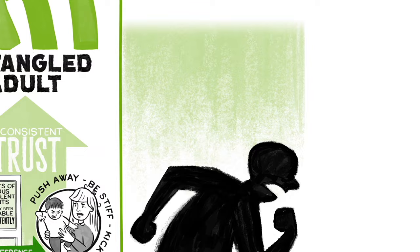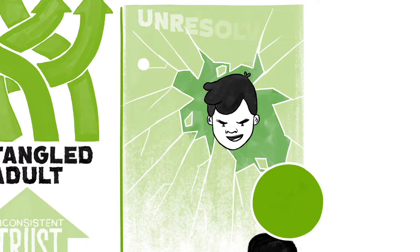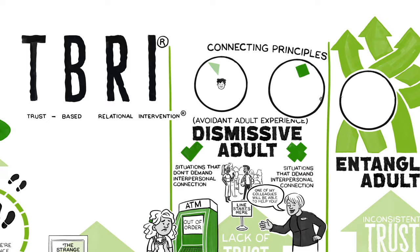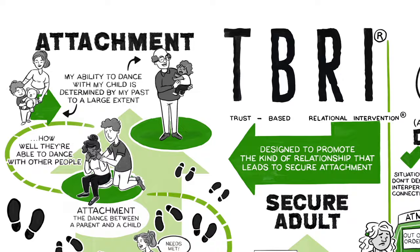When attachment is derailed, we have kids who look angry and can't regulate their emotions. In TBRI, we talk about principles — the connecting principles are designed to promote the kind of relationship that leads to secure attachment.